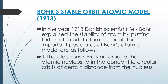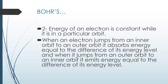Next is Bohr's stable orbit atomic model, given in 1913. Danish scientist Niels Bohr explained the stability of the atom by putting forth a stable orbit atomic model. The important postulates are: electrons revolving around the atomic nucleus lie in concentric circular orbits at certain distances from the nucleus. Energy of an electron is constant while it is in a particular orbit. When an electron jumps from an inner orbit to an outer orbit, it absorbs energy equal to the difference of its energy levels, and when it jumps from an outer orbit to an inner orbit, it emits energy equal to the difference of its energy levels.